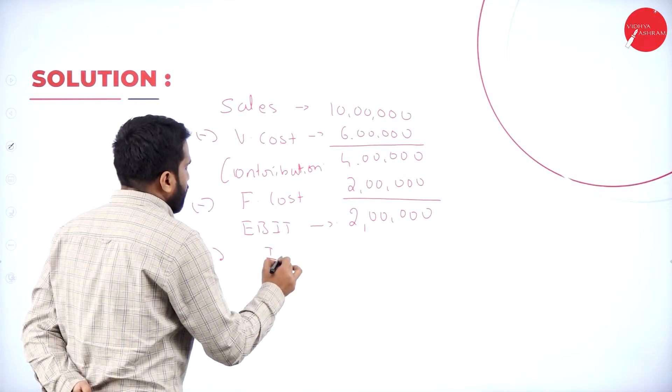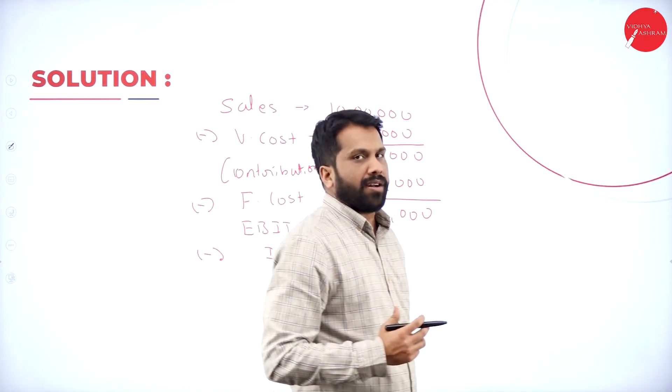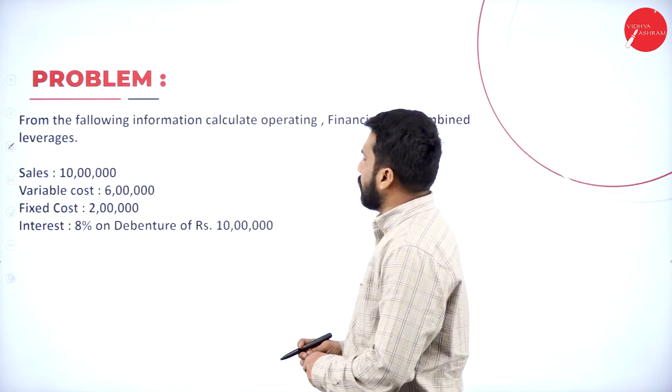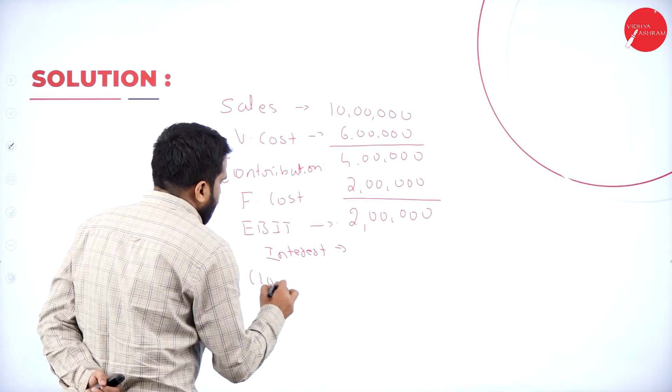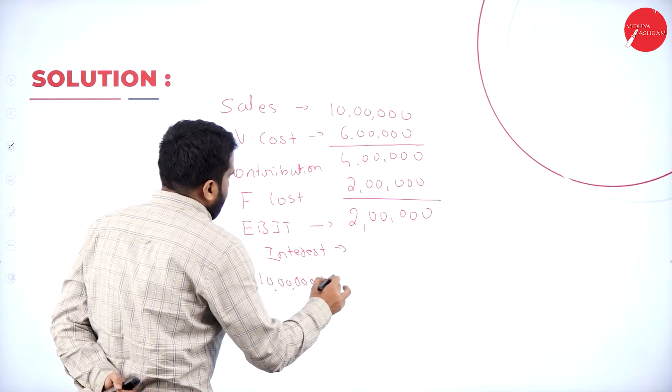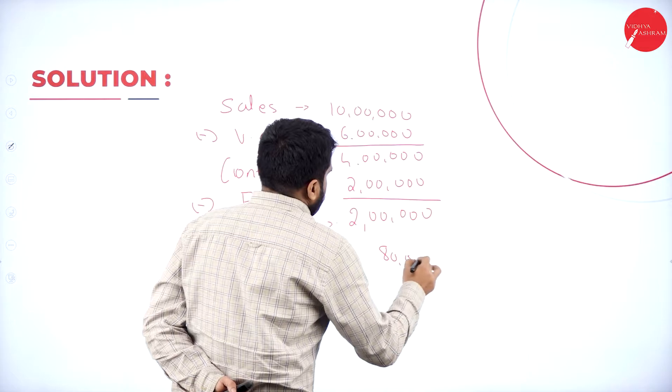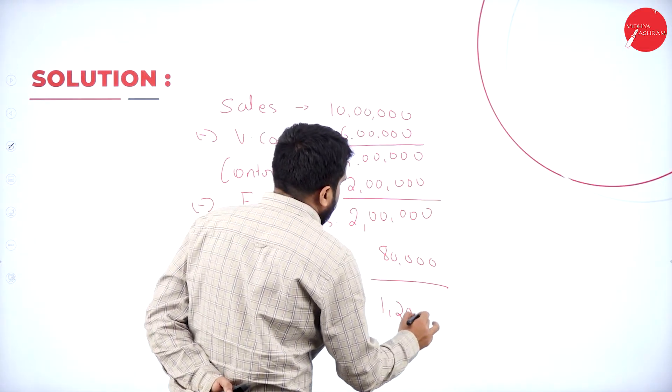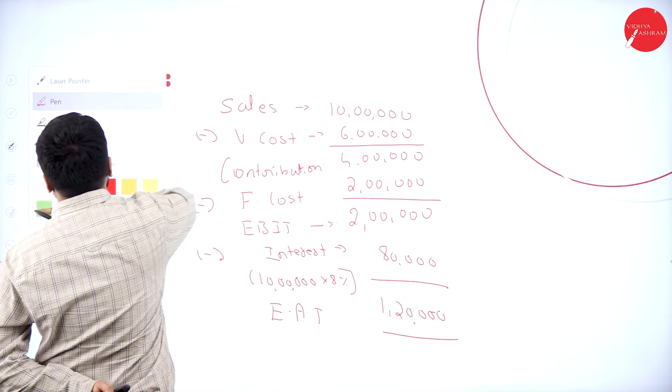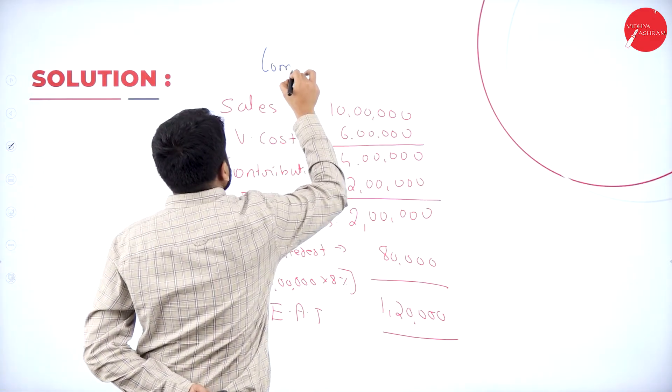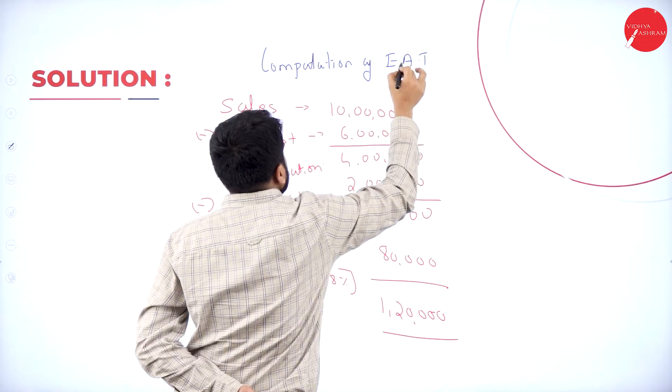EBIT minus interest. Interest usually calculated on what? Interest is usually calculated on debentures. What is your debenture value? Your debenture value is 10 lakh on 10 lakh calculate 8%. 10 lakh on that you calculate 8%. So, how much it is? It will be 80,000. 2 lakh minus 80,000. I got 1 lakh 20,000. This is what? Earning after tax. Your heading is Computation of earning after tax.